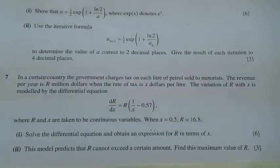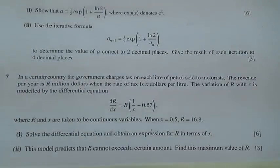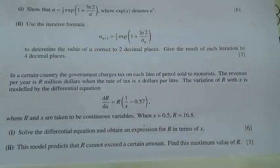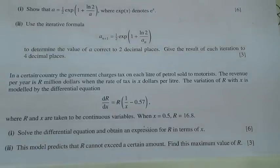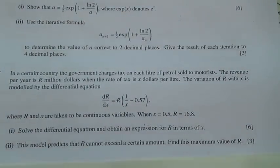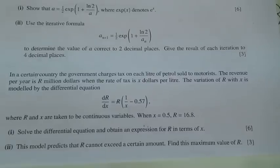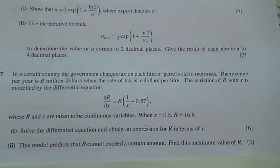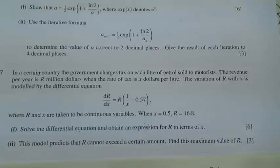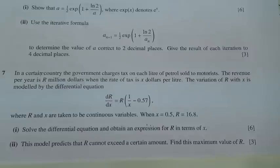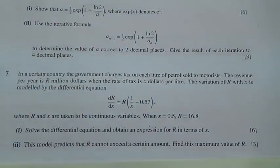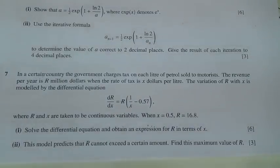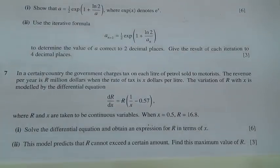In a certain country, the government charges taxes on each litre of petrol sold to motorists. The revenue per year is R million dollars when the rate of tax is X dollars per litre. The variation of R with X is modeled by the differential equation dR/dx equals R times 1 over X minus 0.57, where R and X are taken to be continuous variables. When X is equal to 0.5, R is equal to 16.8.